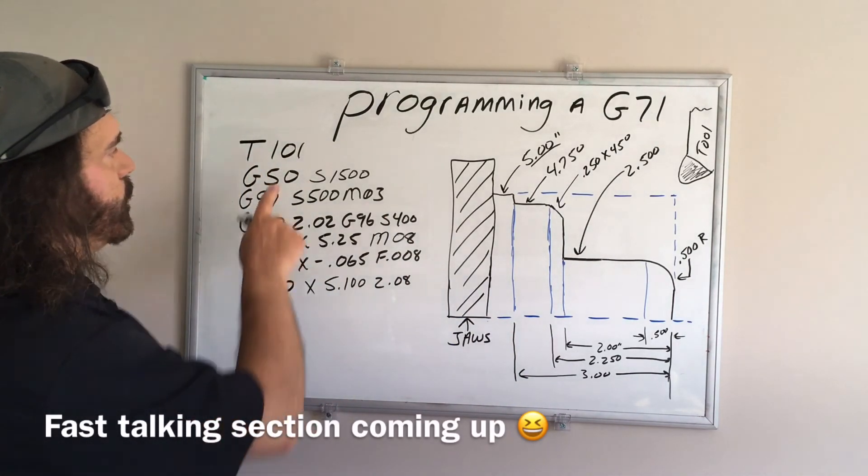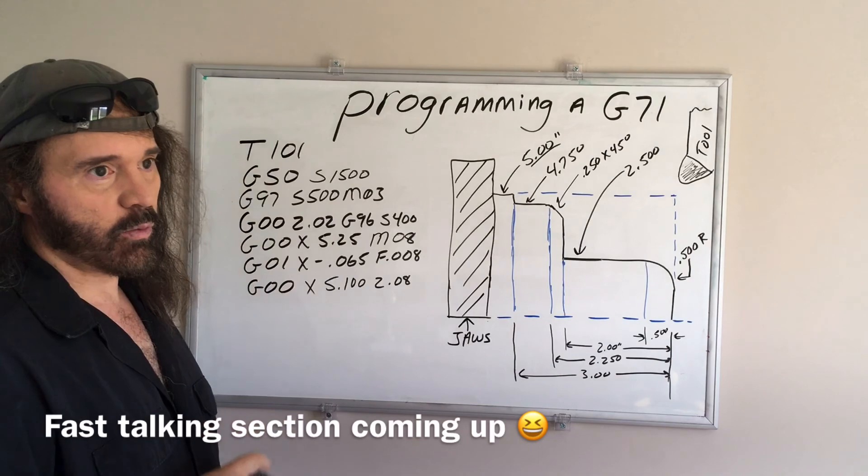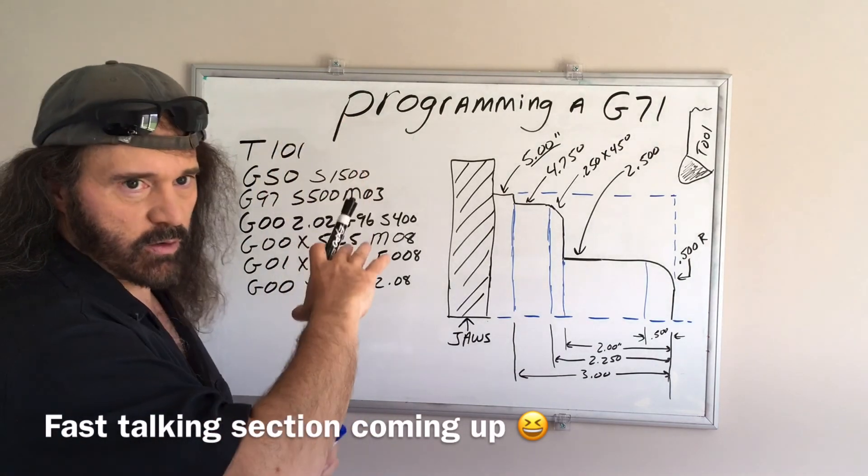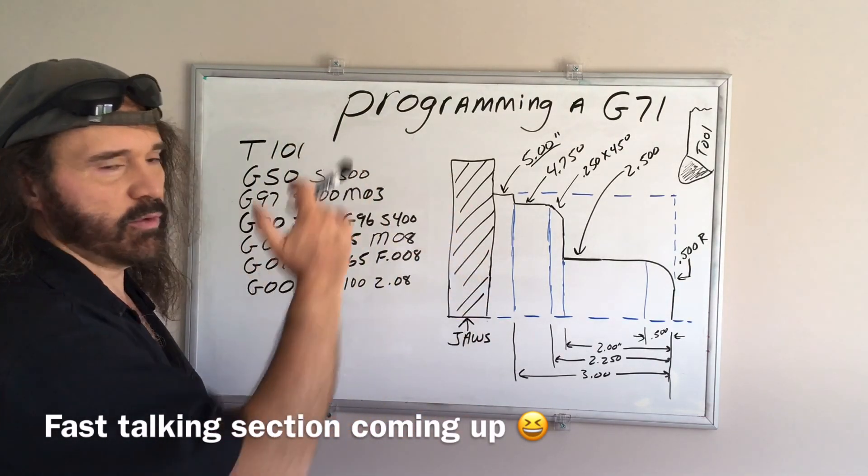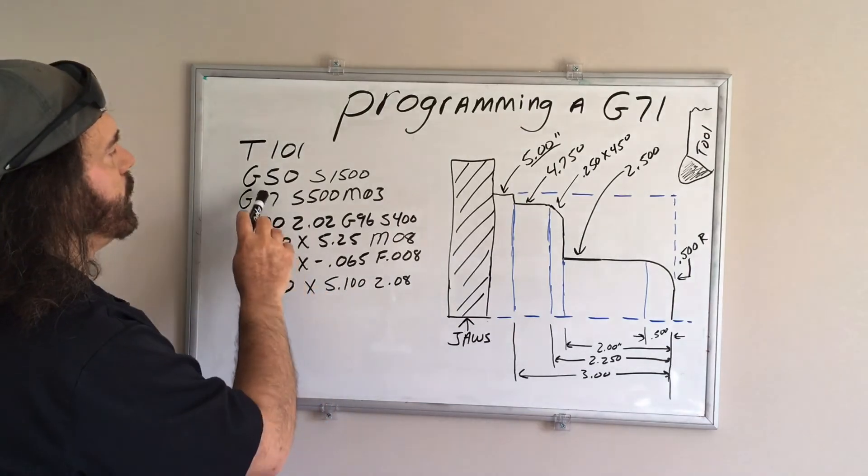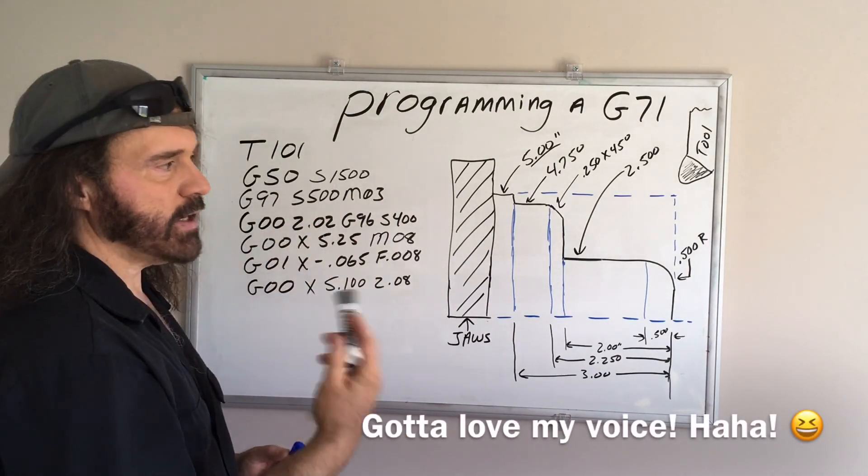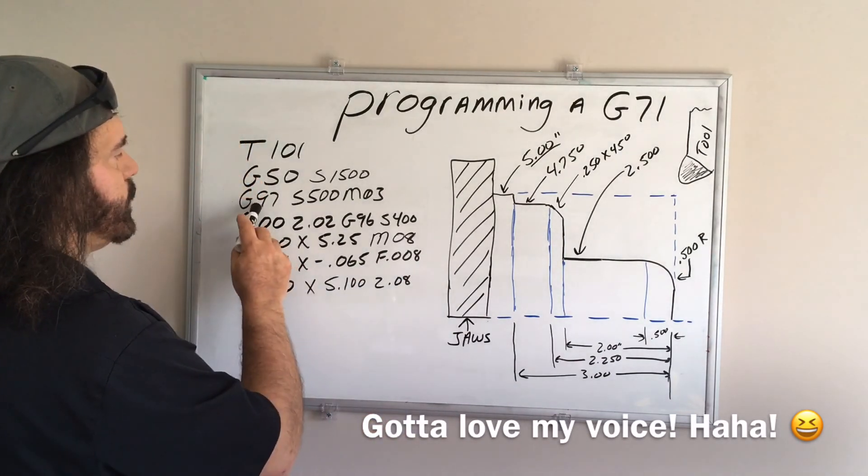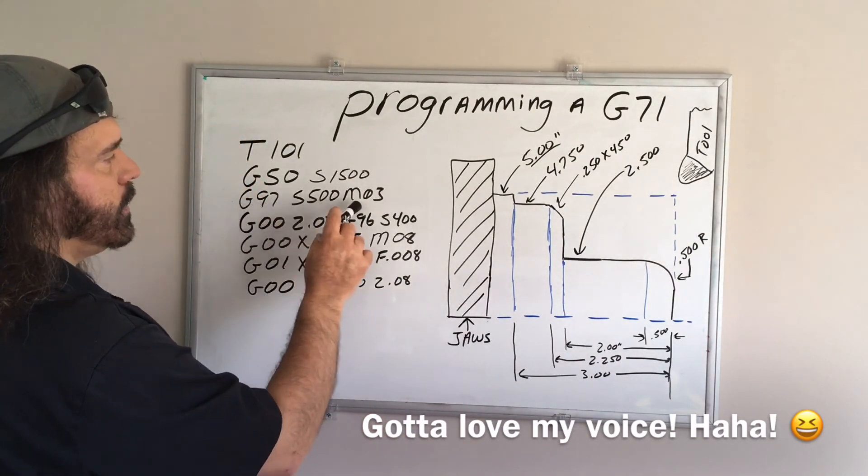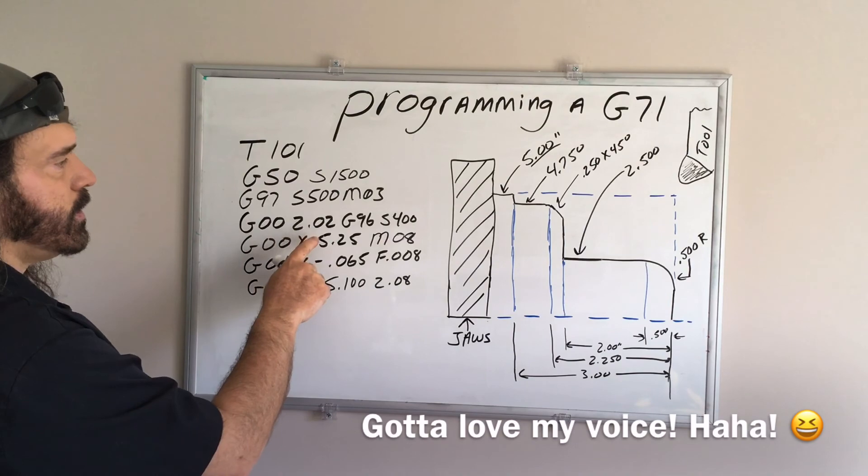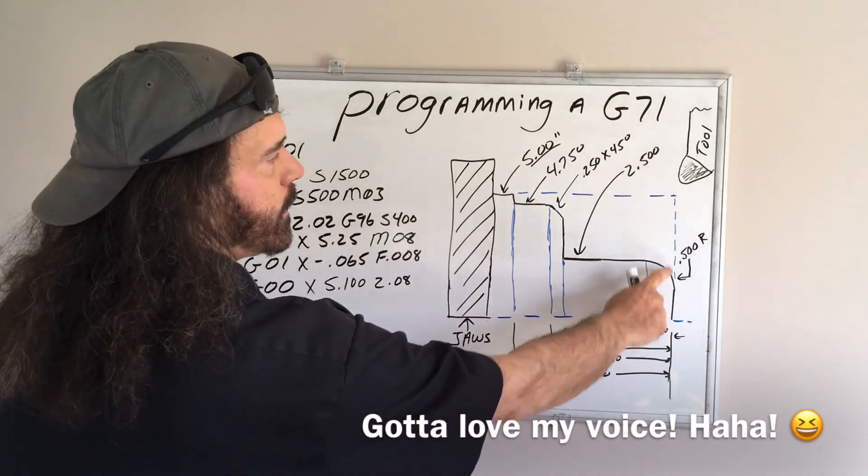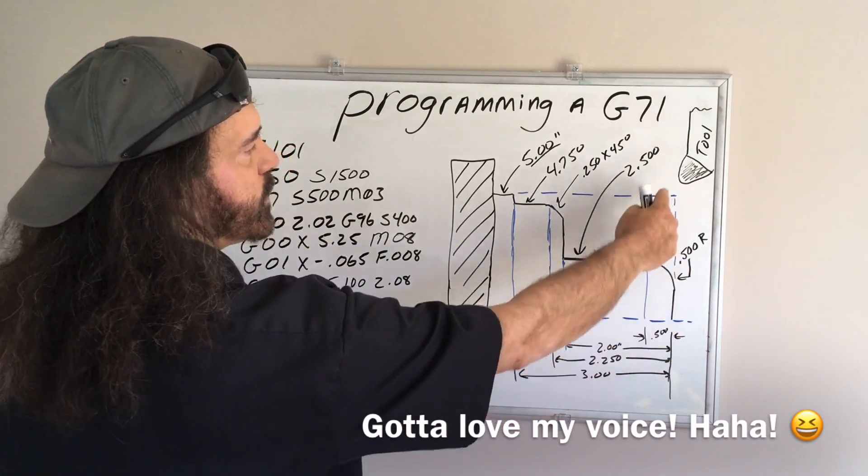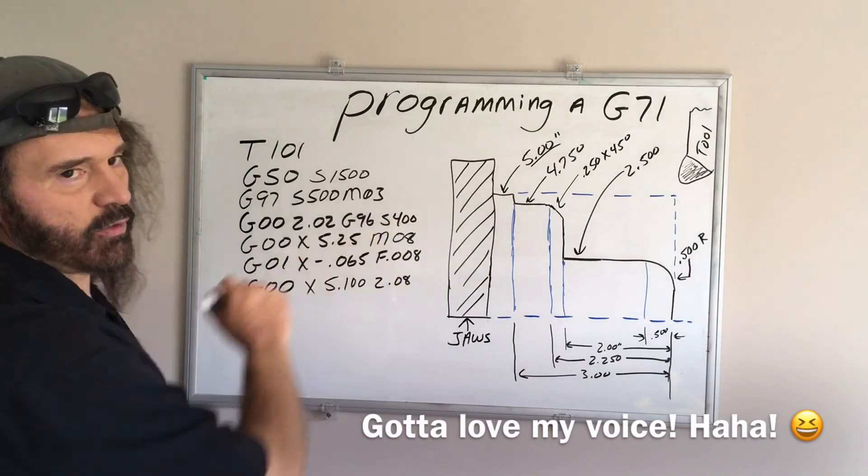So let's say we're using tool one, offset one, and I'm going to presume you saw my other videos and explained all that stuff, so I'm just going to move ahead. A G50 spindle speed of 1500 maximum, I'm just throwing these out there, that's just for this demonstration. We're going to turn the spindle on at 500, with an M03, we're going to rapid 20 thousandths in front of this surface, this is our G54 surface, and we're going to do a surface speed of 400 RPMs.